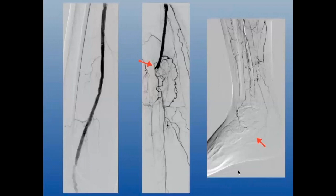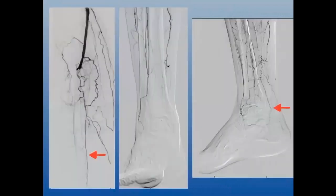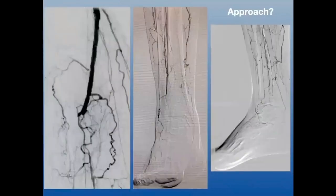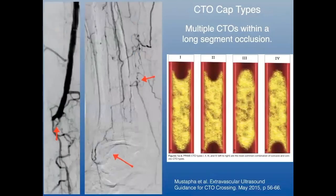At this point I said to myself I'd most likely need dual access, but what information is out there to help me decide on my approach? I was thinking: let's recanalize the anterior tibial, go after the pedal loop if needed, TP trunk to peroneal — maybe that'll be enough.